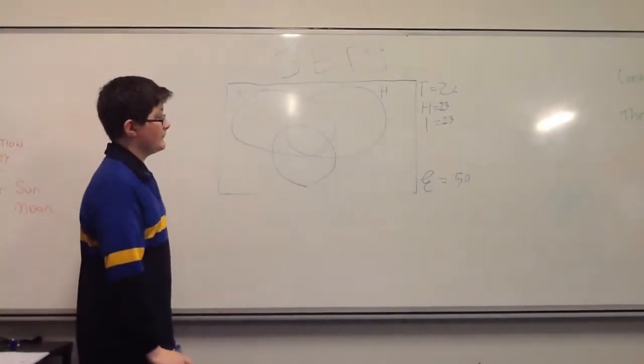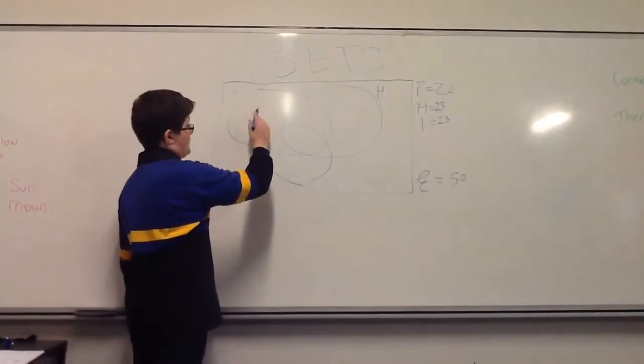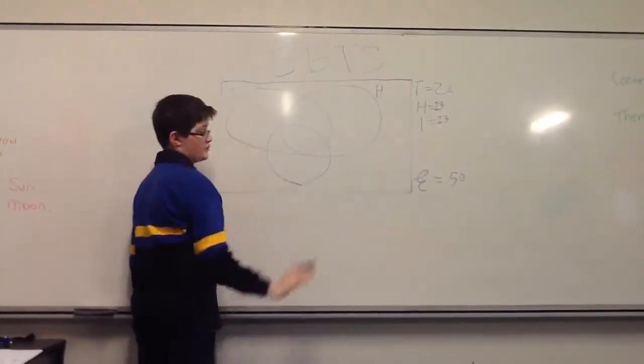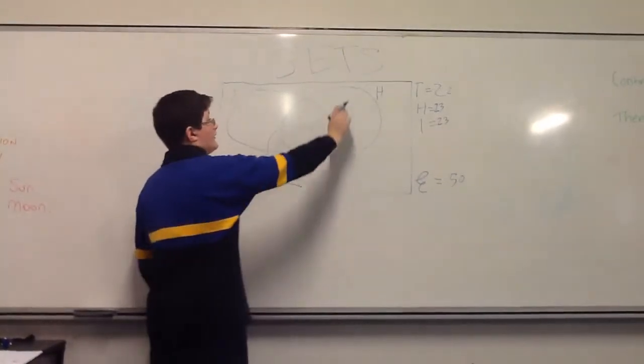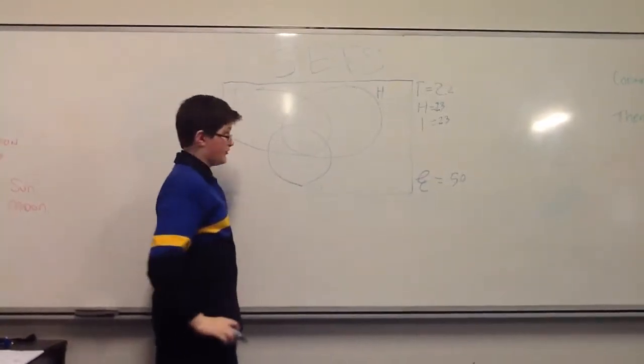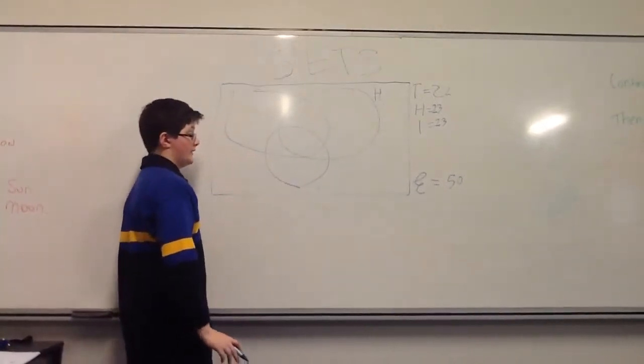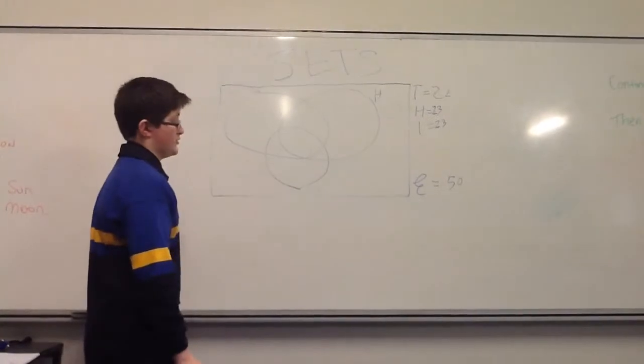So T, the entire circle, is 22. H, the entire circle, is 23. And I, the entire circle, is 23 as well.